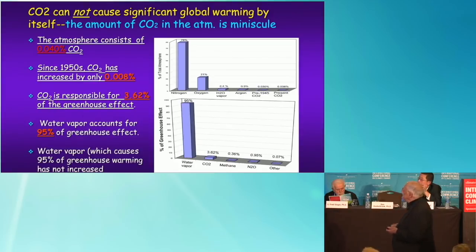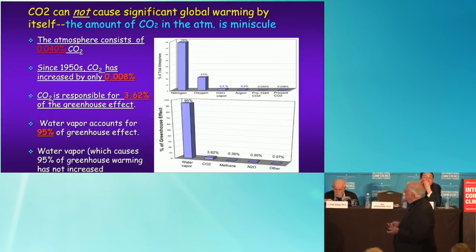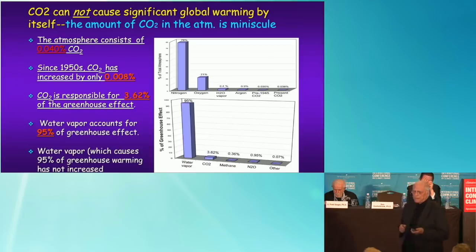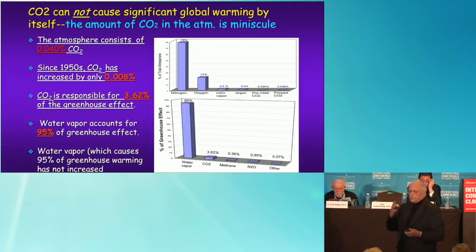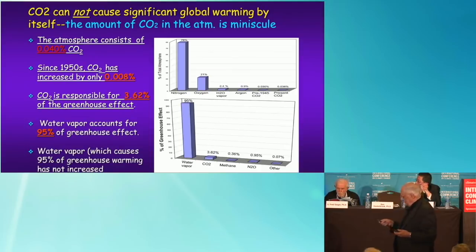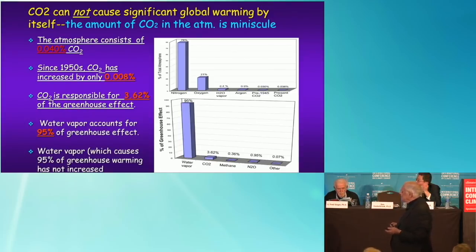The second line of evidence is that CO2 cannot cause significant global warming by itself, simply because the amount of CO2 in the atmosphere is minuscule. The atmosphere now consists of about 4/10,000ths of 1% CO2. So if you take 100 molecules of air out of this room, you'll have only 4 molecules of carbon — that's about as close to nothing as you can get. If you double nothing, you've still got nothing. Furthermore, CO2 is a greenhouse gas that accounts for only about 3.6% of the greenhouse effect; 95% is water vapor.